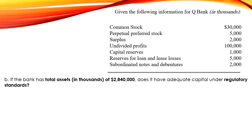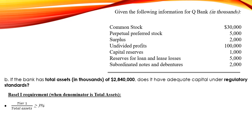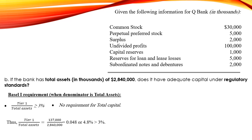If the bank has total assets of $2,840,000, does it have adequate capital under regulatory standards? Regulatory standards here are those of Basel 1. Based on Basel 1 requirements, when the denominator is total assets, Tier 1 over total assets must be higher than 3%; however, there is no requirement for total capital in this case. Tier 1 divided by total assets equals $137,000 / $2,840,000 = 0.048, or 4.8%, which is higher than the required 3%. Therefore, Tier 1 capital is adequate.